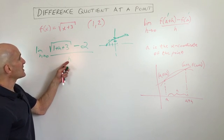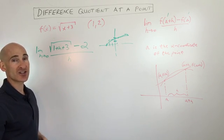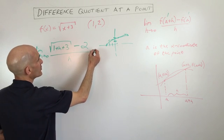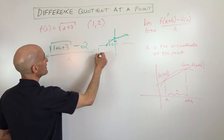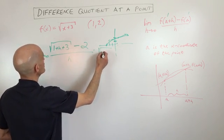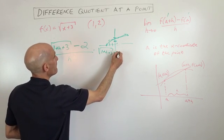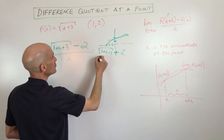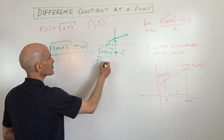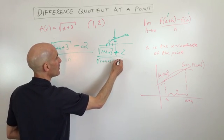Now the only thing we have to do now is we just have to simplify this a little bit further. We're going to use the rationalizing technique. So what I'm going to do here is I'm going to multiply the numerator and the denominator by the conjugate. So this is square root of one plus h plus three plus two. And I'm going to do the same thing to the denominator as well.